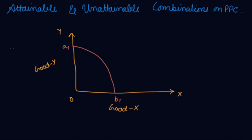Now, the combinations on the production possibility curve A, B, C, D, E, F. These combinations show that your resources are fully and efficiently utilized.